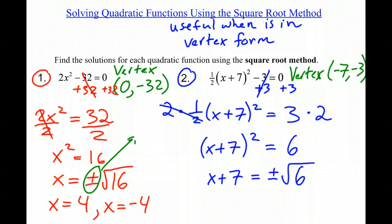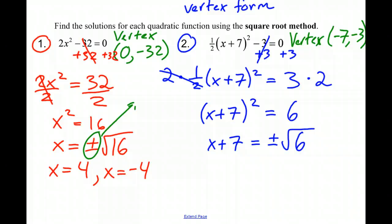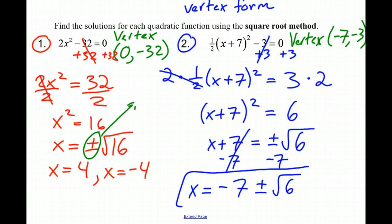If you have a calculator, you can do that. But for now, I'm just going to leave it as radical 6. So to get my final solution for x, I need to subtract 7 from both sides. And I get that x = -7 ± √6. That's my final answer.